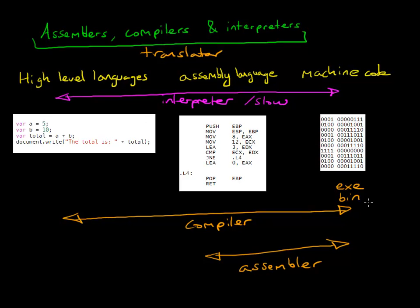Whereas, if it's compiled code, you don't need to have software to get it to work. That will work directly on the machine. But once I've compiled these executables or these binary files, they only work on one machine.